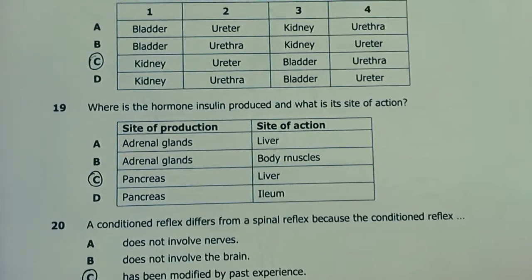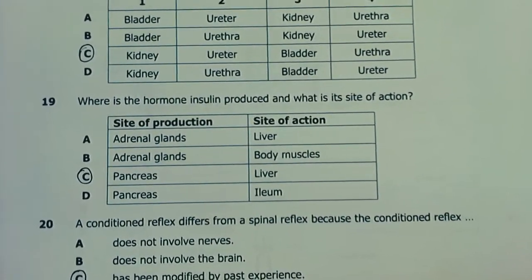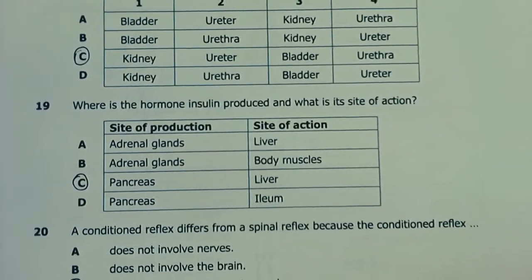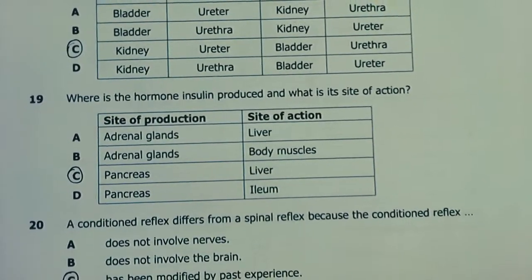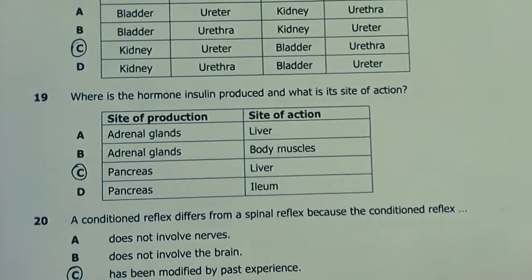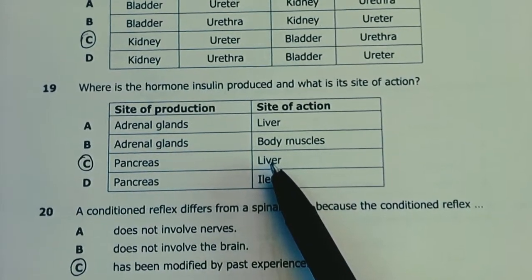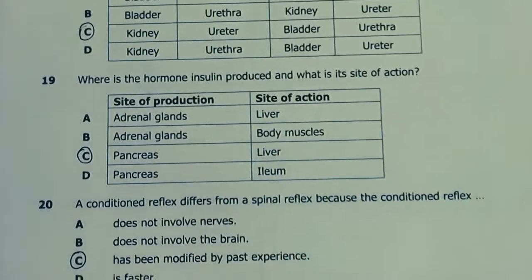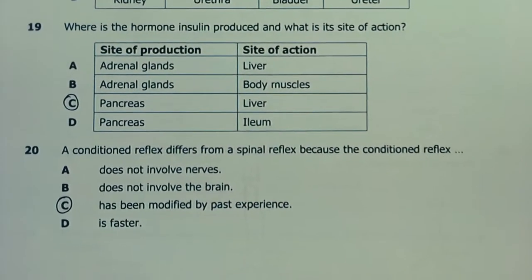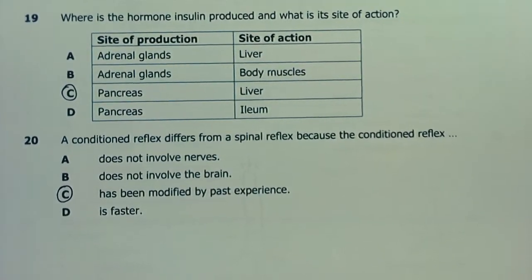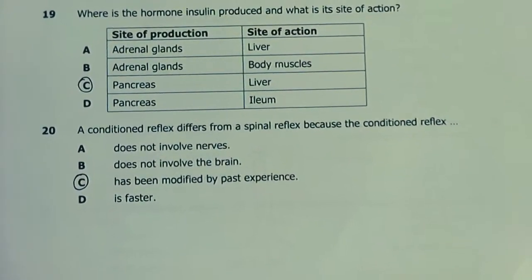Question 19. Where is the hormone insulin produced and what is its site of action? The pancreas produces insulin. Apart from insulin, it also produces glucagon. The two hormones work antagonistically. It targets mostly liver cells and even muscles, but especially liver cells. Insulin helps absorption and metabolism of glucose, therefore conversion of glucose to glycogen in the muscles and liver.